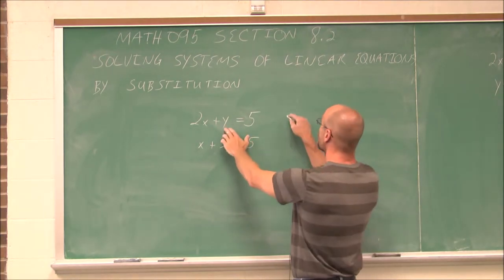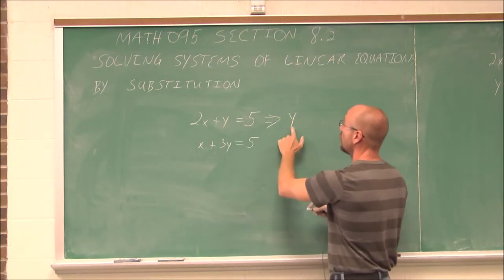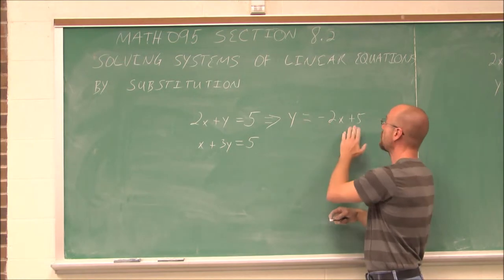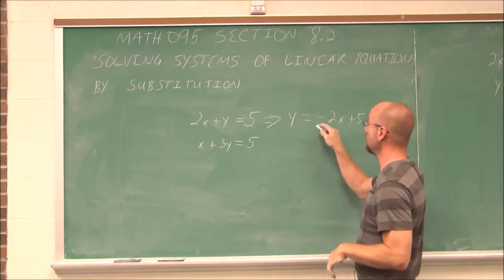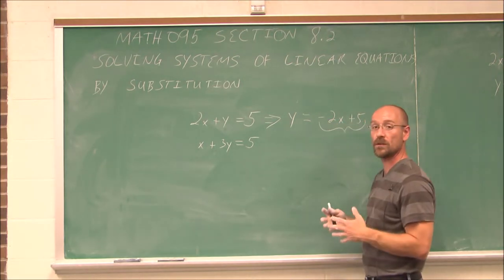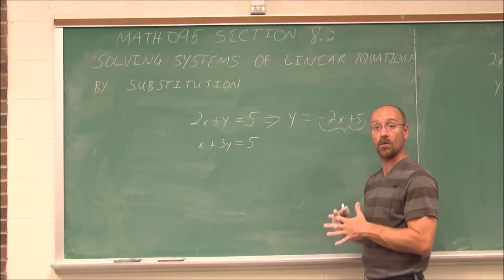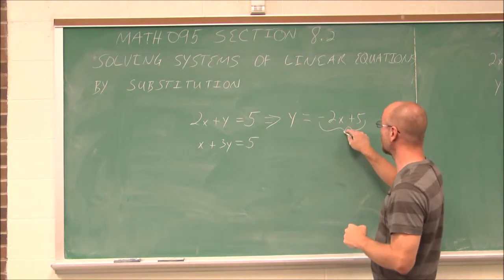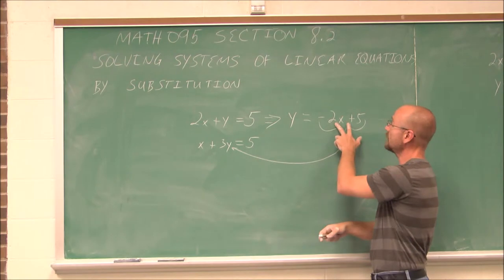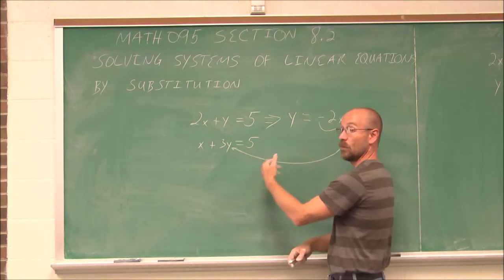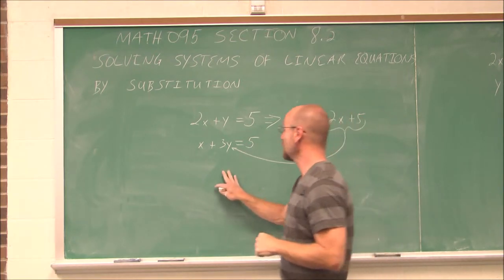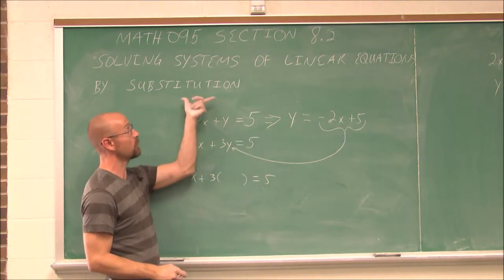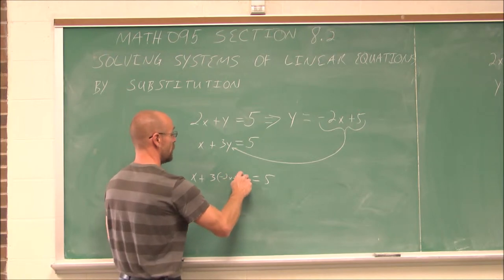Choose a variable and solve for it. So if I take this equation and solve for y, I just have to subtract 2x from both sides. So I would have a negative 2x and that positive 5 on the right side. Now, it's called substitution because if y is this value, and we're looking for the solution where the xy coordinate is the same for both, I want this y to be the same as that y. So I can substitute. Take this value and plug it in for y. If y is negative 2x plus 5, replace y with negative 2x plus 5.